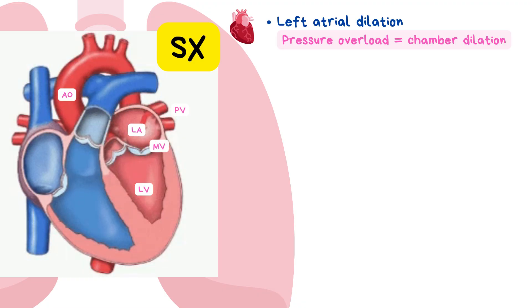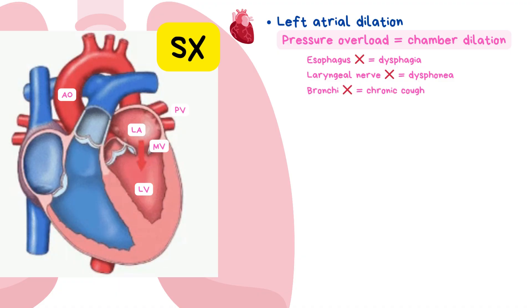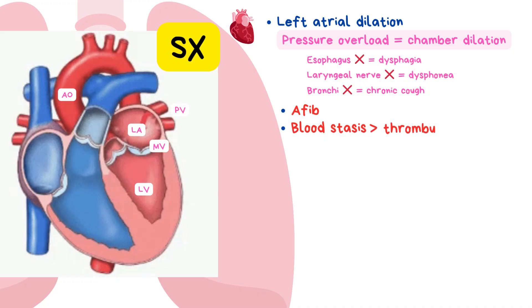As the left atrium enlarges, it starts to crowd nearby structures in the chest. It can compress the esophagus, causing dysphagia or difficulty swallowing; press on the left recurrent laryngeal nerve, causing hoarseness of voice or dysphonia; and even push against the bronchi, leading to a chronic cough. This enlargement also disrupts the heart's electrical signals, causing atrial fibrillation — a chaotic rhythm where the atrium stops contracting effectively. Blood then pools in a condition called blood stasis, and a clot or thrombus can travel as an embolus to the brain, causing an embolic stroke — a life-threatening complication.